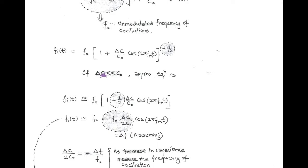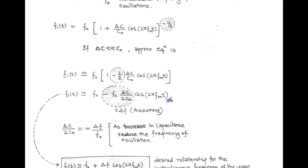We now assume the approximation that ΔC is less than C₀. After this assumption, we get the approximate instantaneous frequency, which equals F₀ times (1 minus (1/2) into (ΔC / C₀) cos(2π fm t)). For convenience, we assume that minus F₀ ΔC upon 2C₀ equals ΔF, because ΔC is very small, making the whole term very small with the unit of frequency.